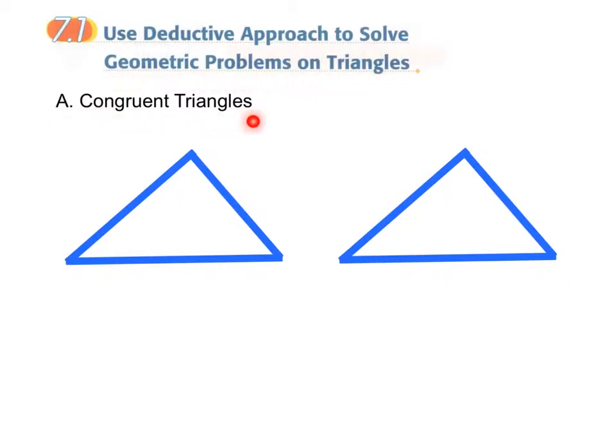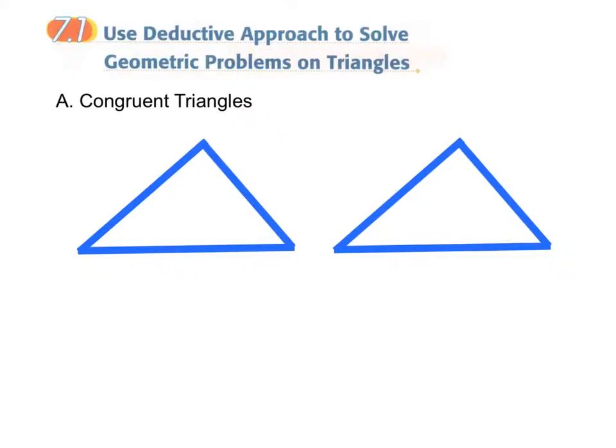First, we are going to talk about congruent triangles. We say that two triangles will be congruent to each other if they have the same size and same shape.